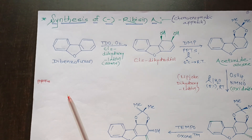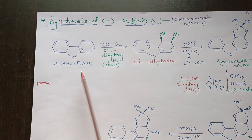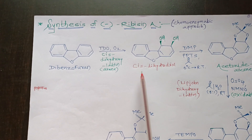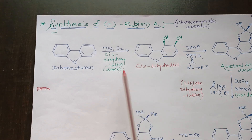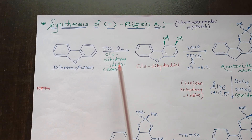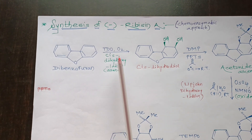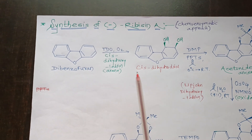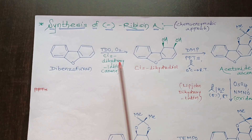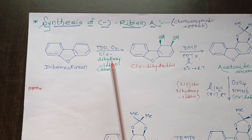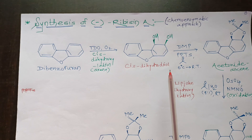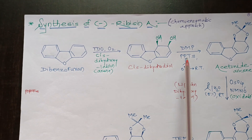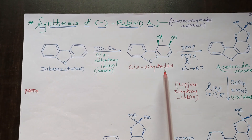Here we will see in detail the synthesis of minus-Rubicin A. A biotransformation of dibenzofuran into cis-dihydrodiol was performed using toluene dioxygenase as an enzyme — that is TDO — in the presence of oxygen. So in the first step, dibenzofuran is converted into cis-dihydrodiol in the presence of TDO and oxygen.